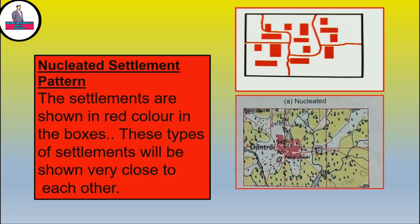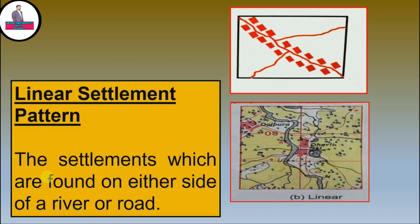The next one is linear. Linear means the settlements which are found on either side of a river or road. You can see the road that is passing through, and either side of the road can also be shown with red boxes. The red boxes can be shown along the road or across the river. You can see in your textbook — it is Dhavali — where a river is passing through it, and beside that the settlement pattern is there. This will be called a linear settlement pattern on the toposheet.